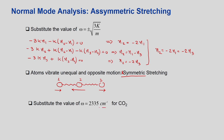Asymmetric stretching requires more energy, so its frequency is higher. For CO2, the asymmetric stretching is observed at 2335 cm⁻¹. The corresponding vibrational temperature is θ_V = 1.4387 × 2335 ≈ 3360 K. This confirms that asymmetric stretching requires more energy than symmetric stretching due to the unequal force distribution.